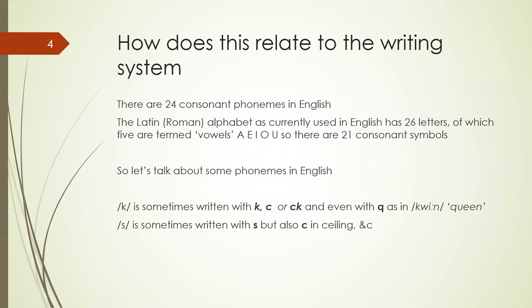So we have 21 consonant symbols but 24 consonants — it's not just that we have to use double letters to cover the gap.